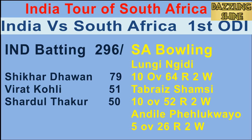Third ball of the 26th over, Maharaj to Dhawan — a beautiful delivery that turns in sharply from off and beats Dhawan, rattling his stumps. The big wicket falls — Dhawan is gone for 79, clean bowled. India are 138 for two.